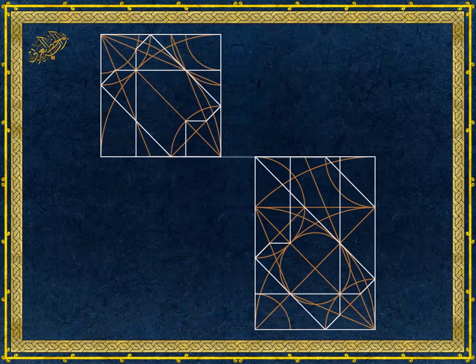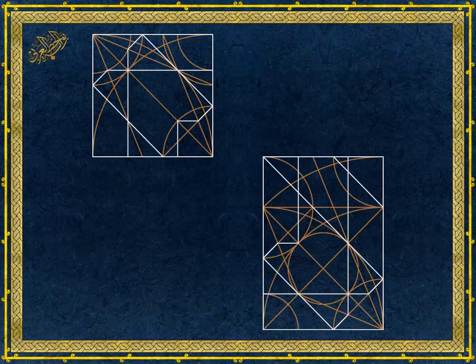If we split the pattern along the root 2 rectangle, we will get two incomplete patterns. One is inside a square and the second one is inside a root 2 rectangle. The reason I say incomplete patterns